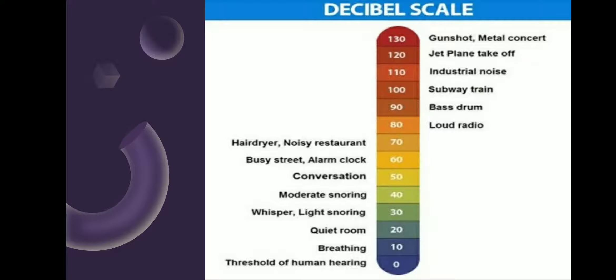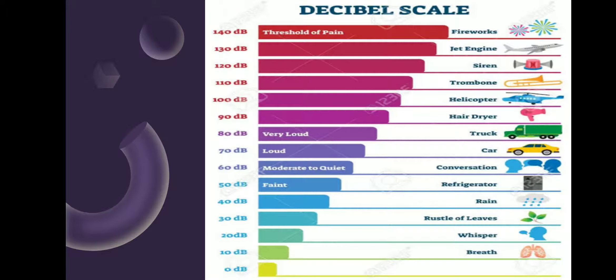The loudness of sound is measured. You can see here the range of the human ear — from blue to red, where red means the most harmful. This is the decibel scale. A whisper is about 30 decibels, and normal conversation is about 60 decibels.